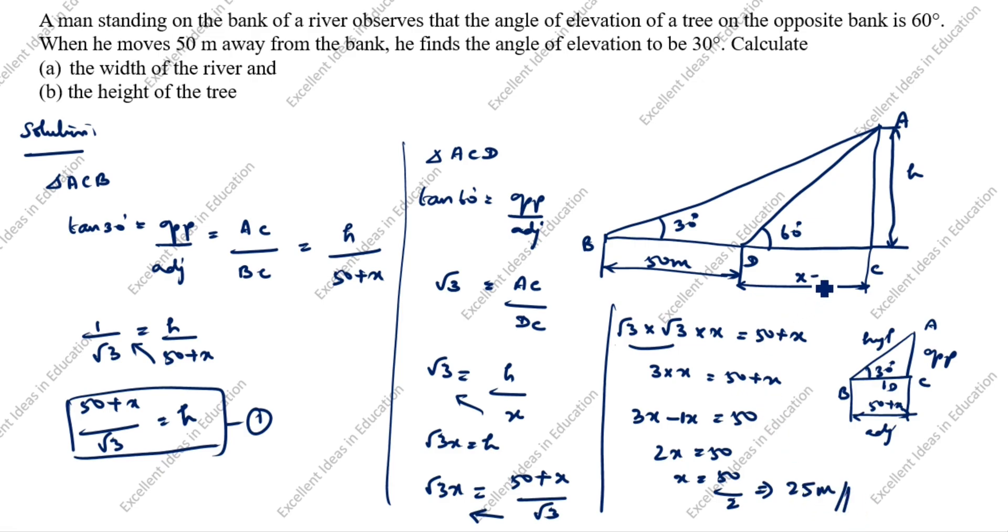So what is x value? This is 25 meters. How we will find h value? So you see here h is equal to root 3 x. h is equal to root 3 x. Now only we got x value, h is equal to 25 root 3 meters.